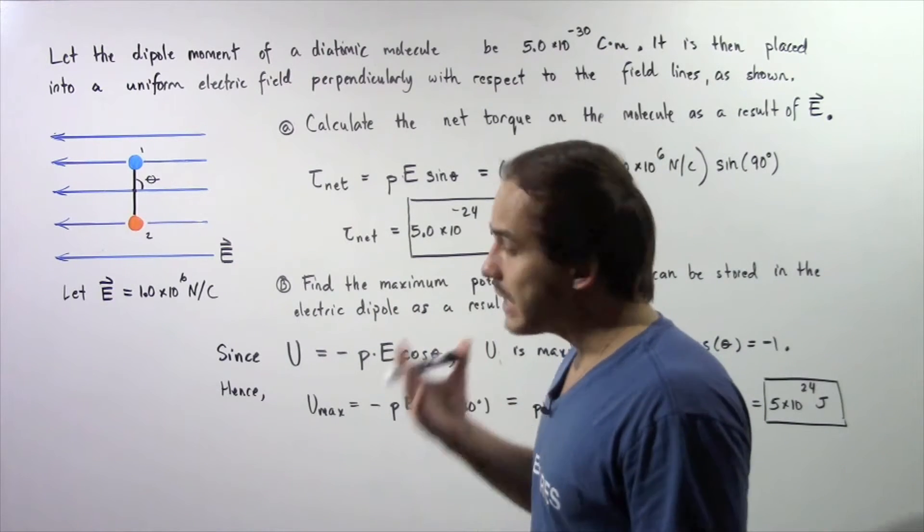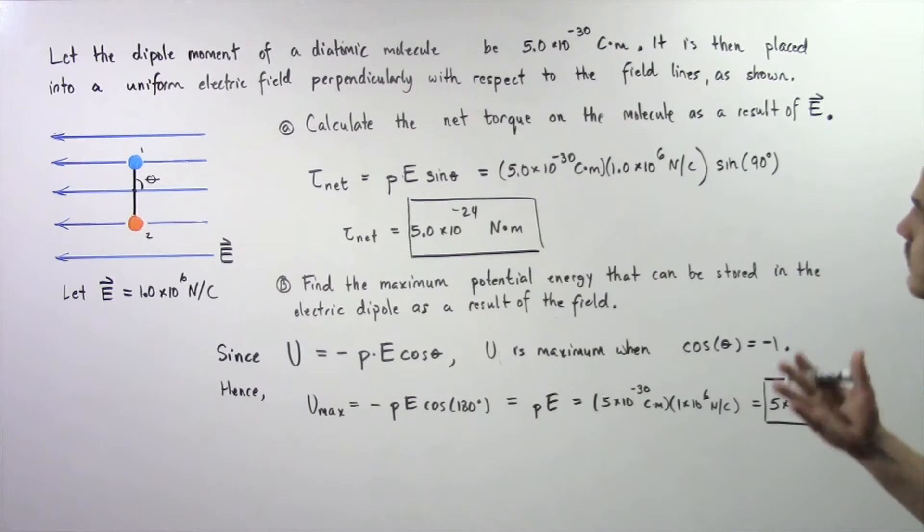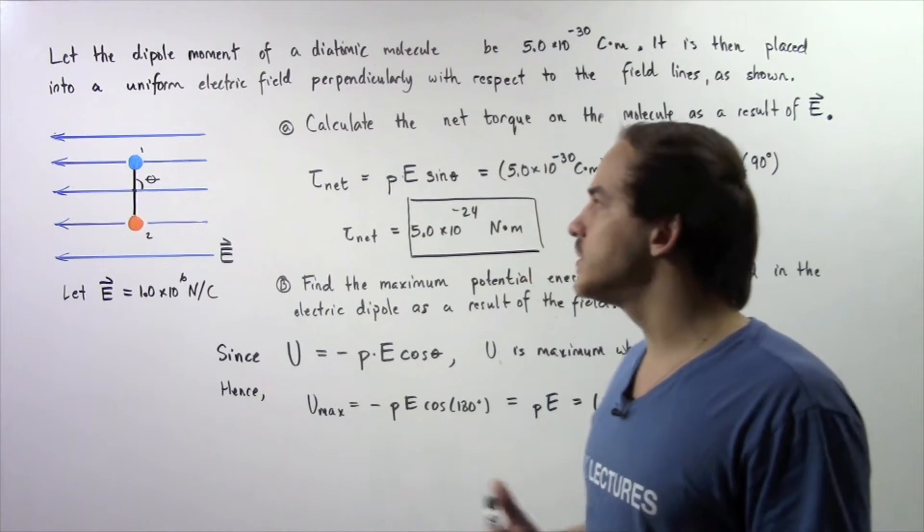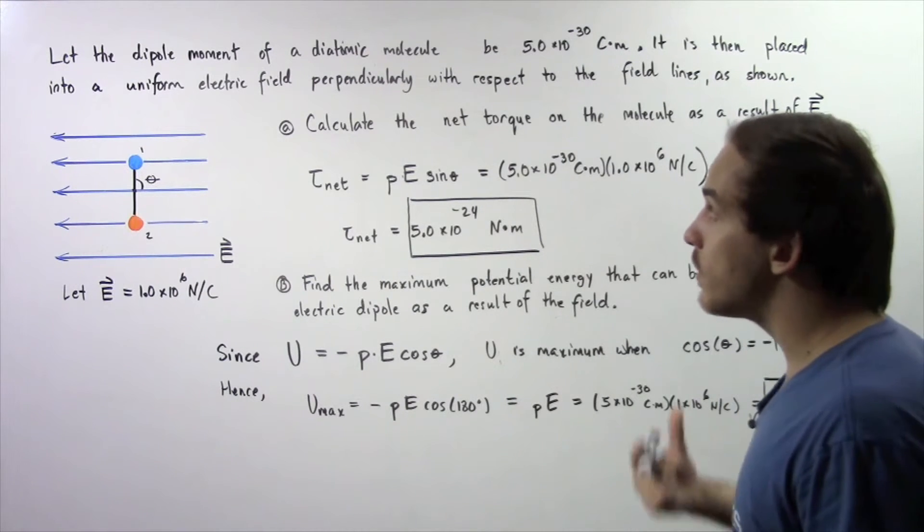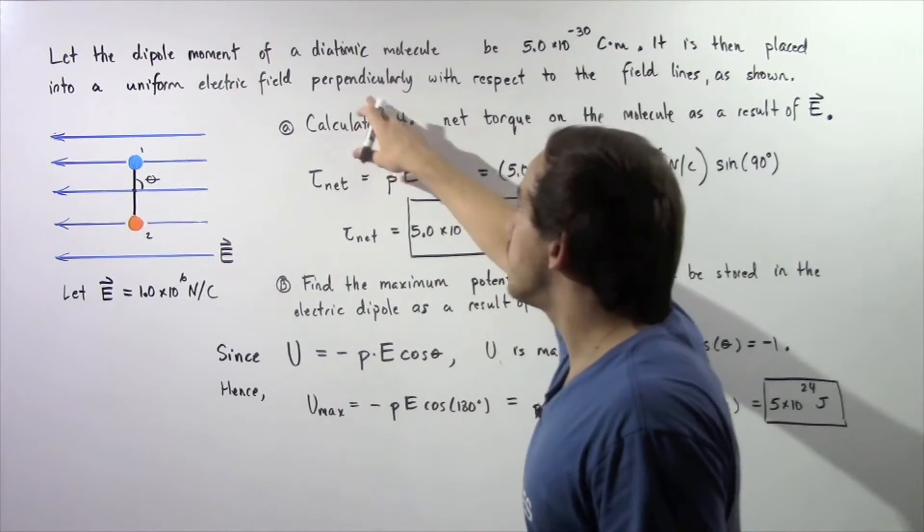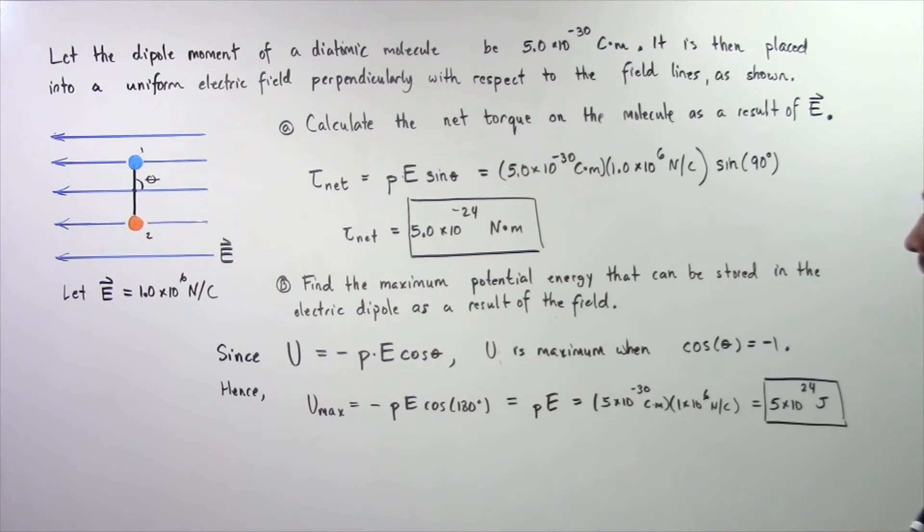Let's suppose the electric dipole moment of a certain diatomic molecule is given to be 5 times 10 to the negative 30 coulombs multiplied by meter. So if we now take our molecule and place it into our uniform electric field perpendicularly with respect to the electric field lines,